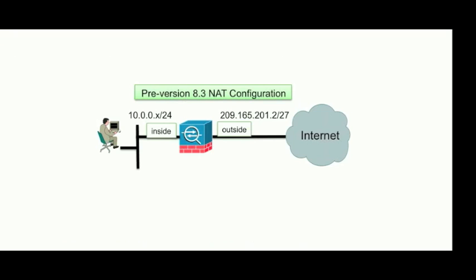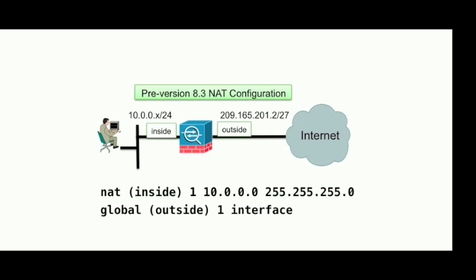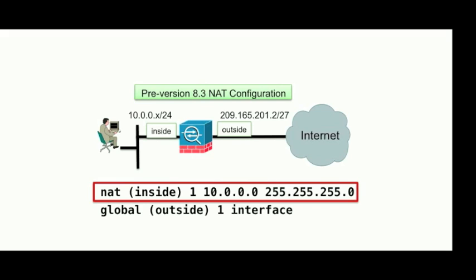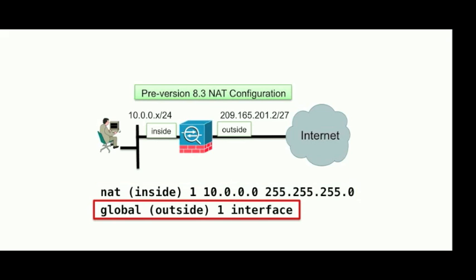Let's take a look at an example of an ASA NAT configuration from version 8.2, where a subnet on the inside interface of the firewall is being port address translated to the outside interface of the ASA. In the example shown, we're using the NAT command and specifying that we want to perform address translation on a subnet behind the inside interface. We're using NAT ID 1, and we're specifying that the 10.0.0.0/24 network is going to be the range of IP addresses we want to perform address translation on.